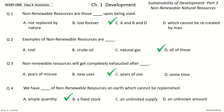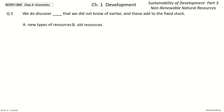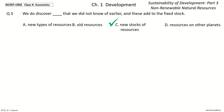Question five: We do discover — that we did not know of earlier, and these add to the fixed stock. The options are new types of resources, old resources, new stocks of resources, resources on other planets. The answer is new stocks of resources: we do discover new stocks of resources that we did not know of earlier, and these add to the fixed stock.